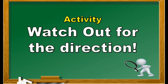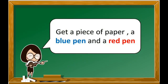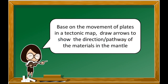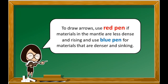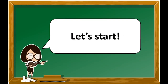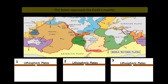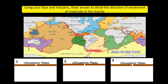Let's have an activity. Watch out for the direction. Get a piece of paper, a blue pen, and a red pen. Based on the movement of plates in a tectonic map, draw arrows to show the direction or pathway of the materials in the mantle. Use a red pen if materials in the mantle are less dense and rising, and use a blue pen for materials that are denser and sinking. The boxes represent the Earth's mantle. Draw arrows to show the direction of movement of materials in the mantle.